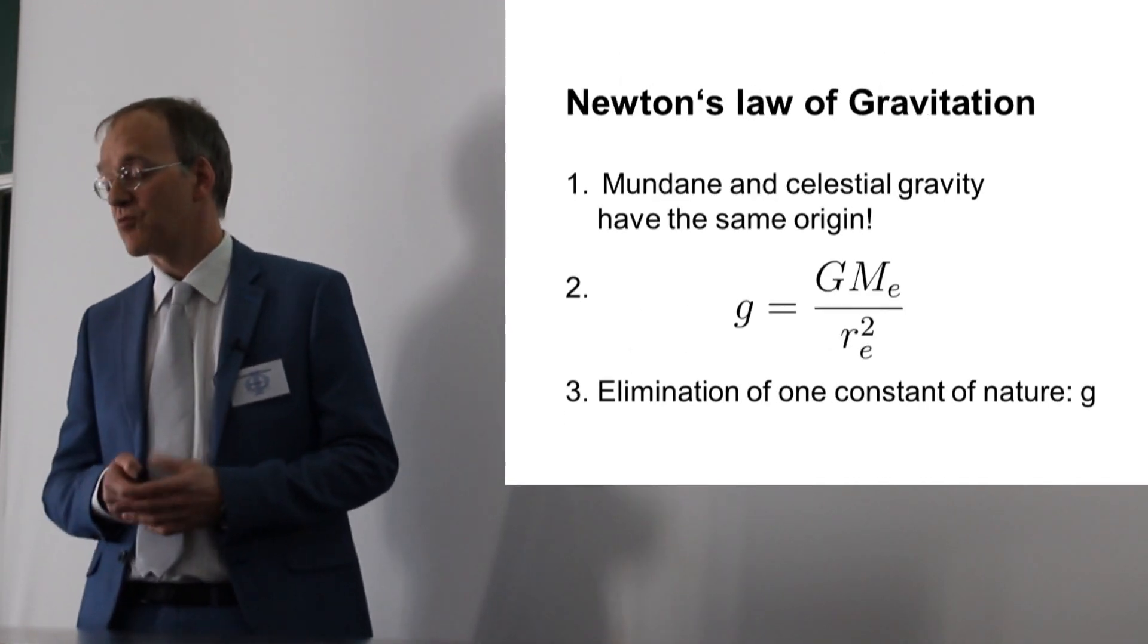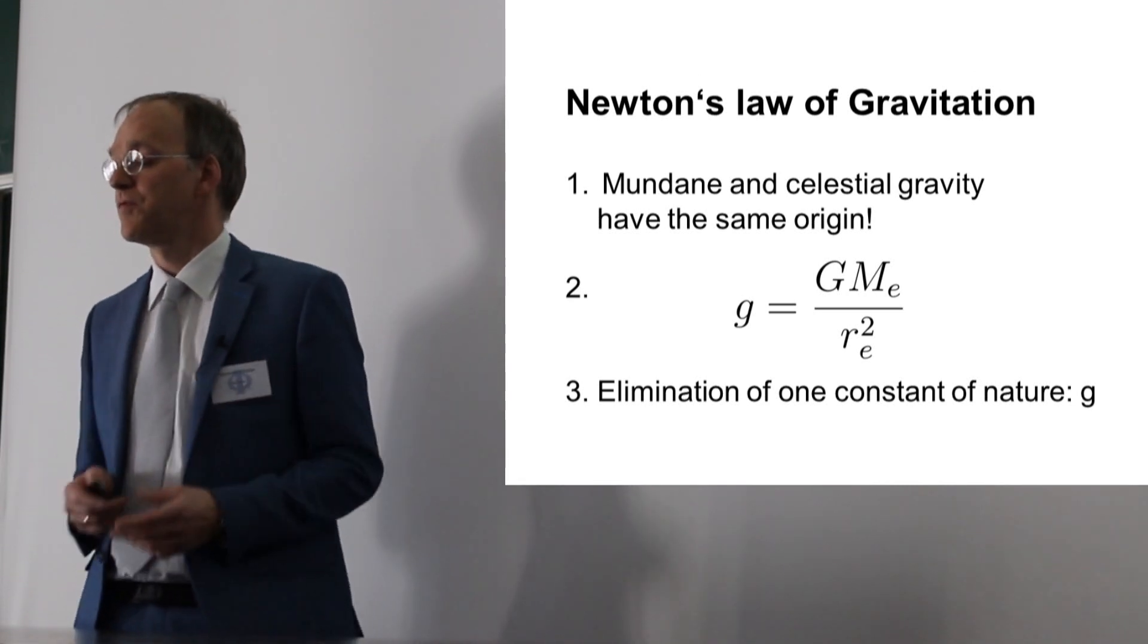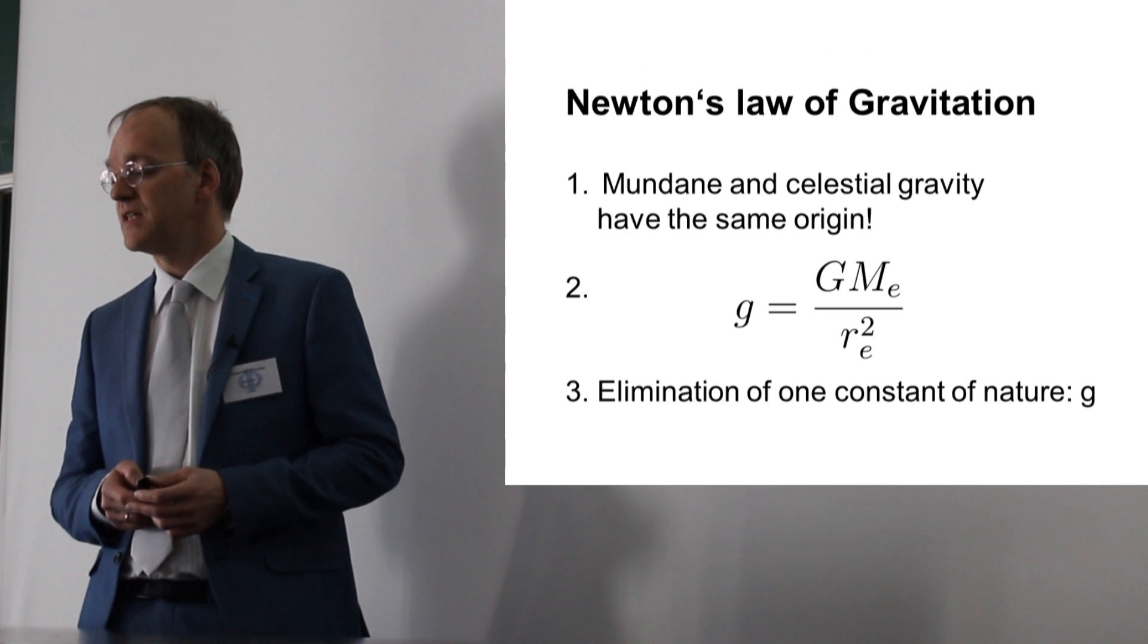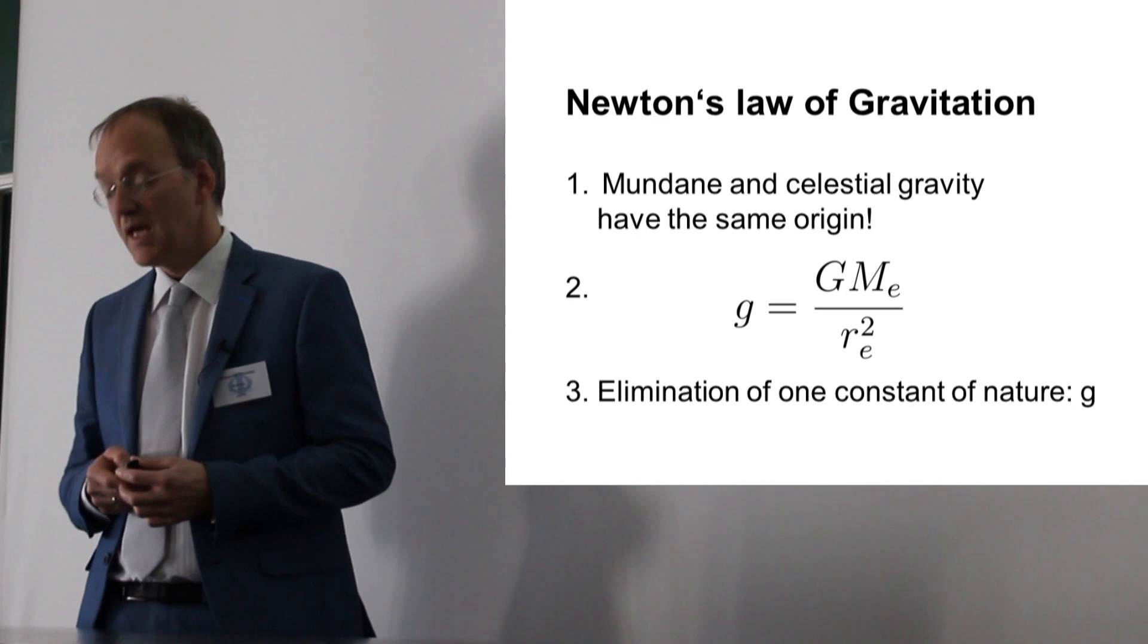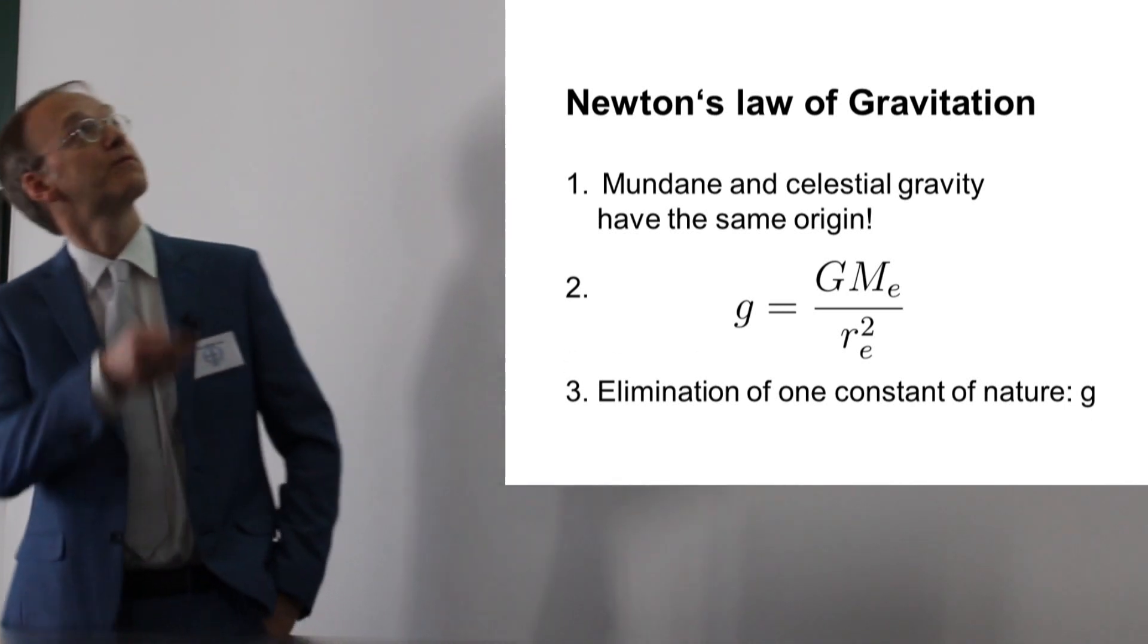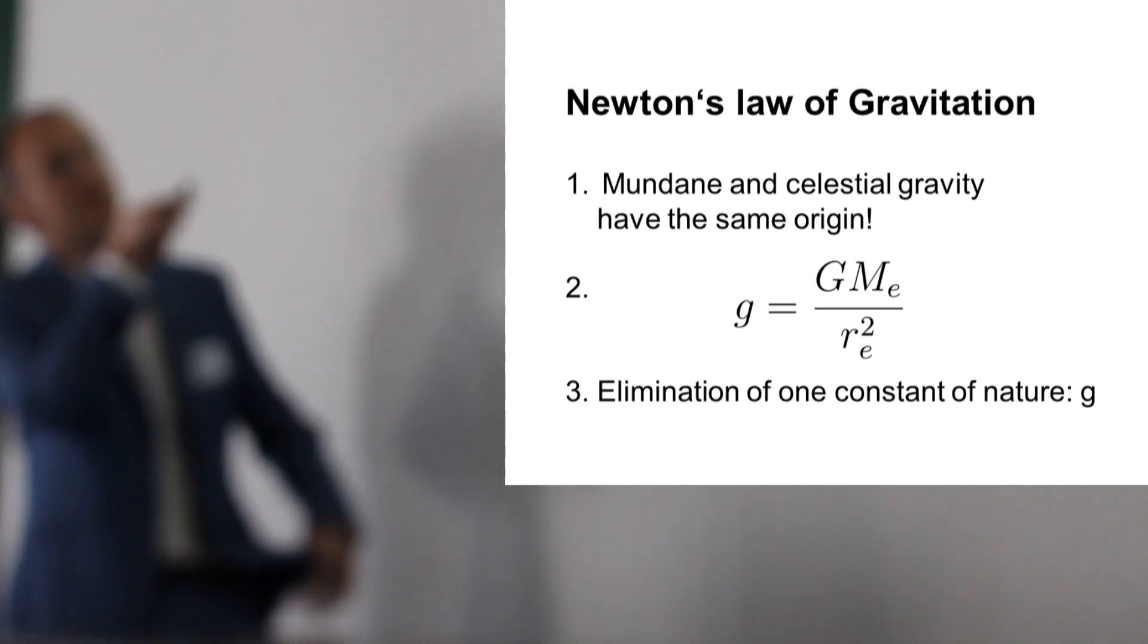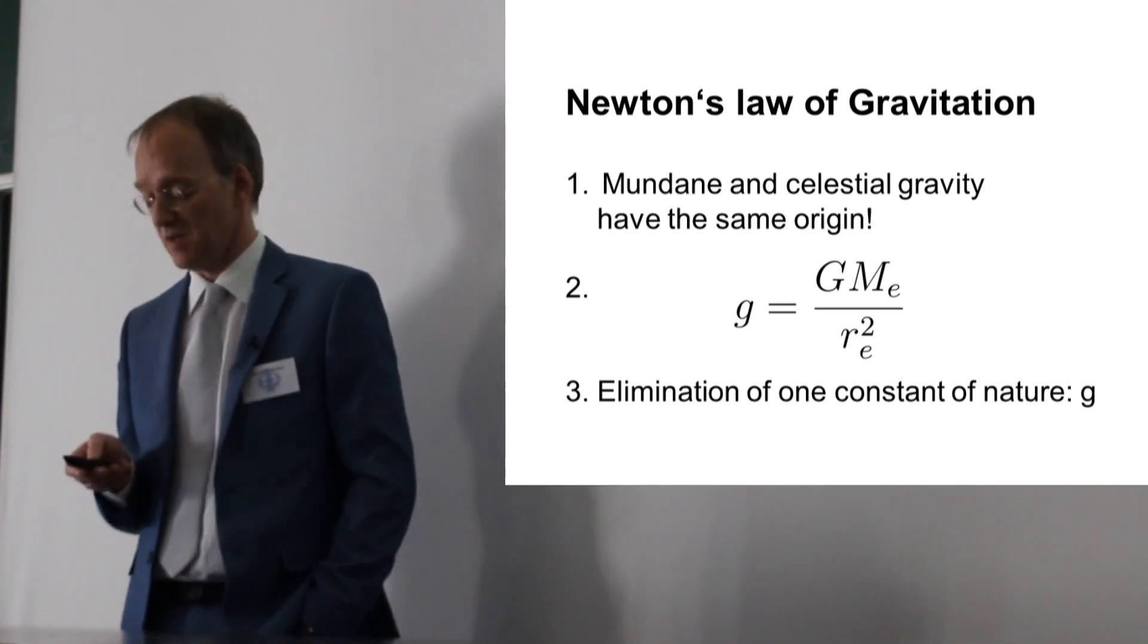I'll give you examples. Newton's law of gravitation. The great idea was the apple and the moon follow the same kind of gravity. Then you have the mathematics, the inverse square law. At the end, you reduce fundamental constants. Before Newton, the acceleration on Earth would have been considered very important, but now it's just a local parameter.